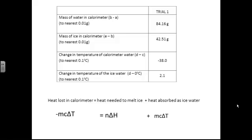Now when we plug our values into this formula, the heat lost in the calorimeter, that's the water in the calorimeter. The water had a mass of 84.16 grams, specific heat capacity of water is 4.19, and the change in temperature was minus 38. But we have two negatives, one in front of the equation and one in the change in temperature, so it gives us a positive value. I'm omitting units for simplicity's sake.